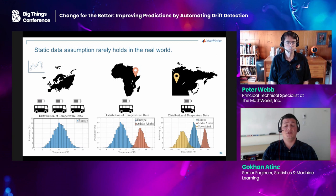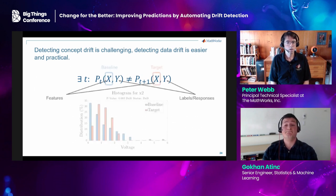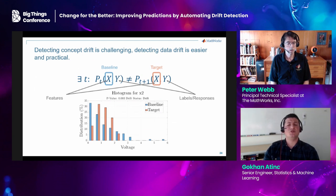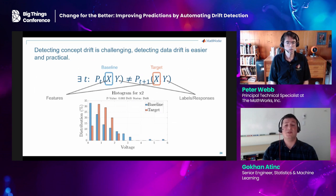It is thus desirable to detect changes in the data developing over time or across regions, and react — most likely in the form of training new models. This change in the data is referred to as drift. In machine learning, drift — or commonly referred to as concept drift — is formally defined as the change in the joint probability of observed features and labels or responses over time. Using this definition, it is quite challenging to assess concept drift for models in production, because we would need both features and ground truth labels. Getting ground truth values in a reasonable amount of time may not be feasible — thus, we can do the next best thing: look at changes in the distribution of what we can observe, the features. We call this data drift or feature drift.